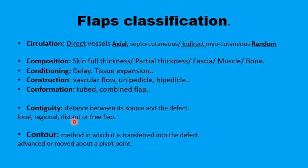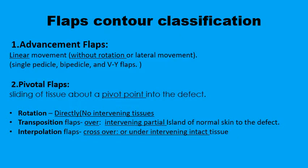Contiguity also includes regional, distant, or even a free flap. The contour is one important aspect of classification because it refers to the method used to transfer the flap into the defect, either through advancement of the flap in linear movement or rotation around the pivot like in rotation flaps. This last C referring to the contour of the flap forms the basis of a common system of classification.